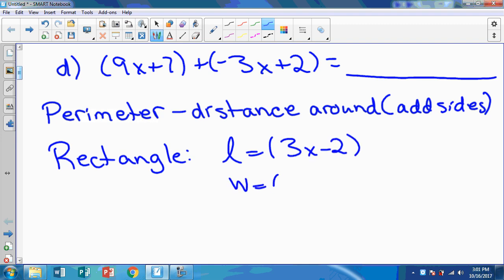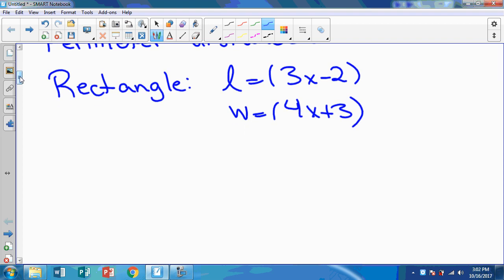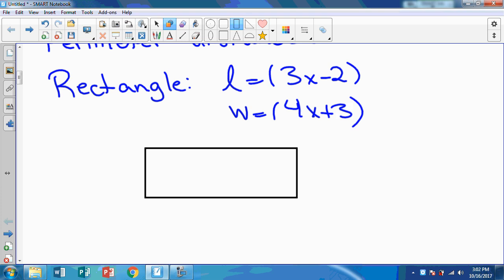And the length is 3x minus 2, and the width is 4x plus 3. Now you might think, okay, so it's 7x plus 1. Well no, because how many sides does a rectangle have? A rectangle has 4 sides. So I would definitely make a sketch of a rectangle. So here's my rectangle.